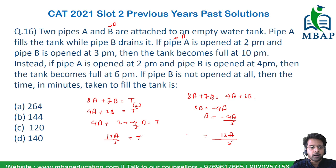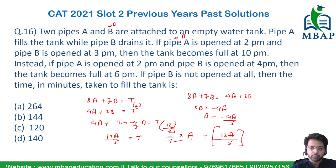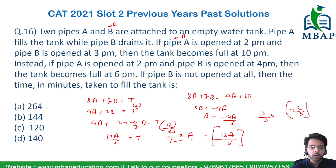Now B is closed, so only A is working. The question is: for how many hours or minutes should A be opened to fill the tank of capacity 12A/5? The value of time will be 12/5 hours, which equals 2 and 2/5 hours — that corresponds to option B, which is 144 minutes. That is the answer.